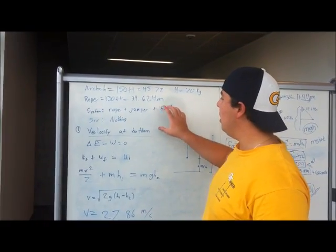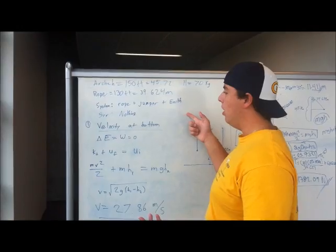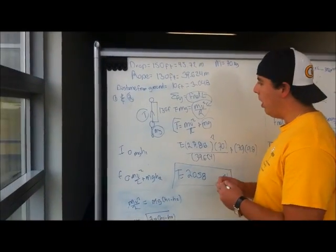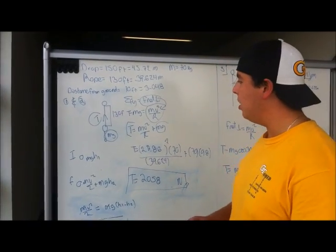The system we chose is the rope plus the jumper plus the earth, so that the surrounding was nothing. First, we have to analyze the rope frame as if it was an ideal rope, so that it has no stretch.